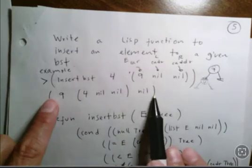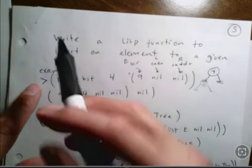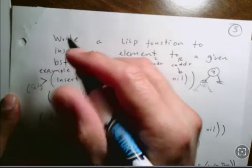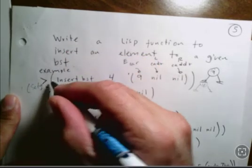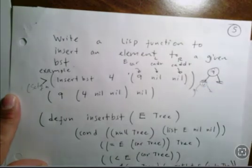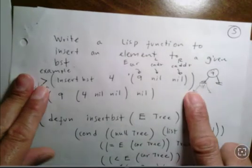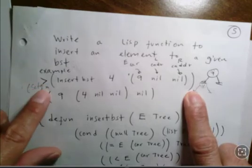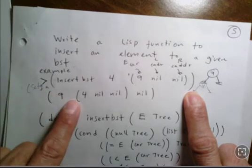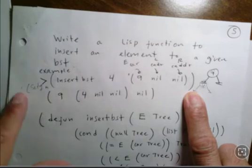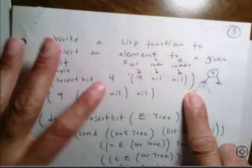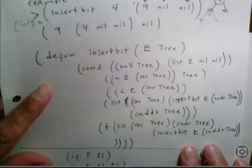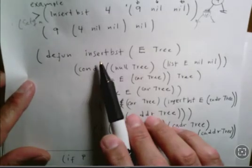If I want to use this and assign the result to a variable, I can use setq — for example, setq my-tree to whatever the insert statement returns. If I'm just testing the insert function, the call alone is enough. If I want to assign it, I use setq to point a variable to this structure, and then later I can insert something else — like 7 — by passing that variable instead of the explicit structure.